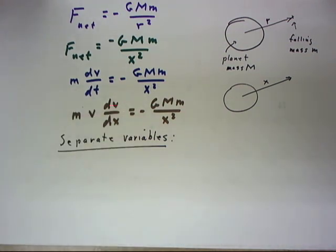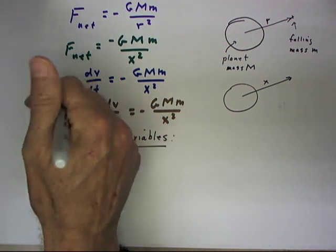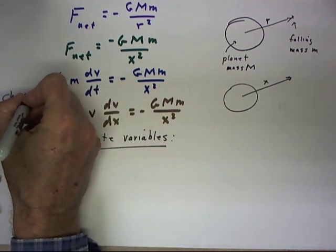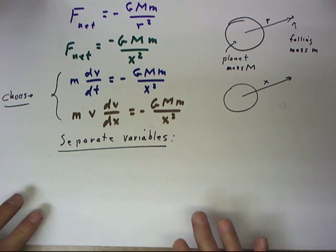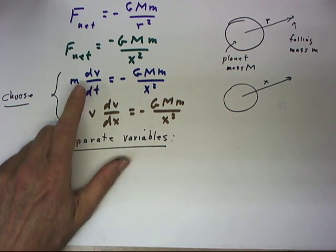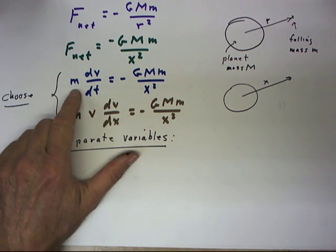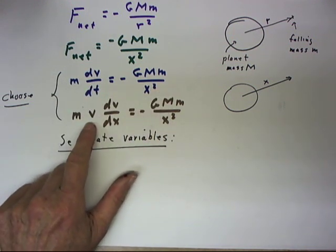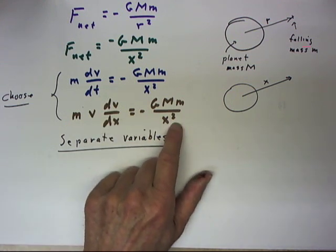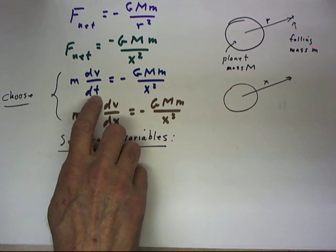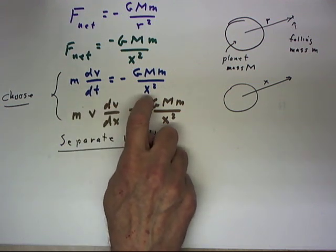Now, we have a choice of two ways to represent our differential equation for the velocity function. We could write it as M dV/dt equals this expression, or M v dV/dX equals this expression. Here, the variable is T, whereas our force is given in terms of X.